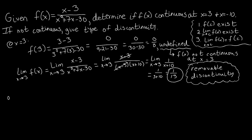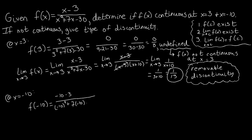Now let's look at what happens at x=-10. Just like before, we start by asking: does f(-10) exist? Evaluating f(-10): we get (-10-3) on top over ((-10)² + 7·(-10) - 30), which gives us -13 over (100 - 70 - 30) = -13 over 0. We can't divide by zero, so the value f(-10) is undefined as well.